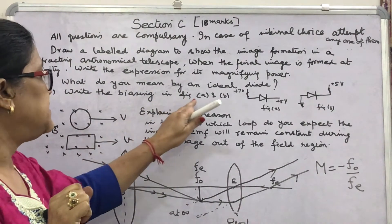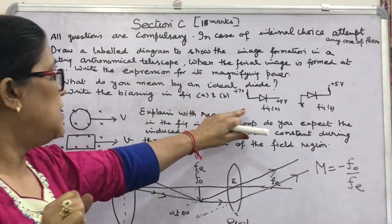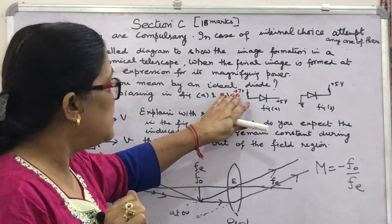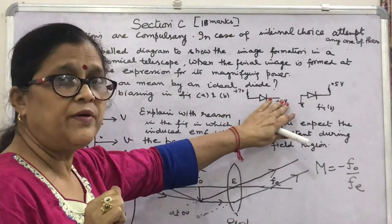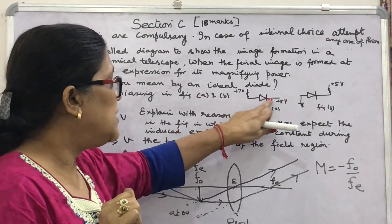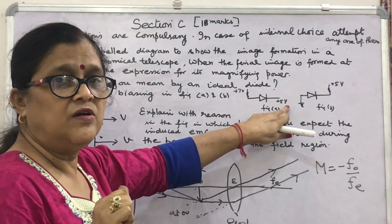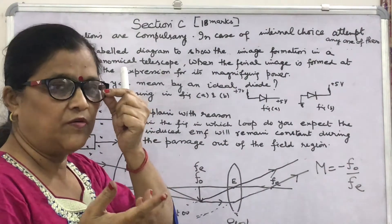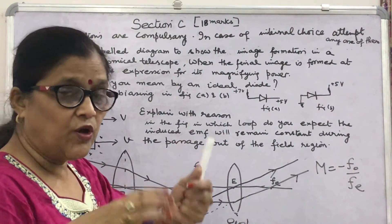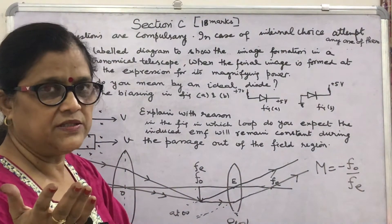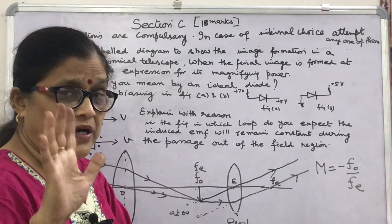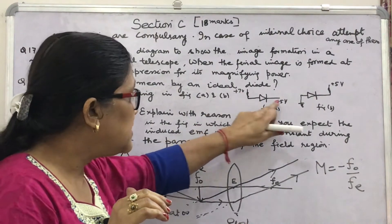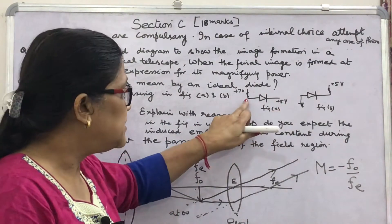The second part: write the biasing in figures A and B. In this figure, the arrow marks P and N. P is at relatively higher potential compared to N — P is at 7 and N is at 5. It is not only the plus and minus terminals of the battery that determine forward or reverse biasing. Here both are at positive potential, but P is relatively at higher potential than N, so this is forward biased.